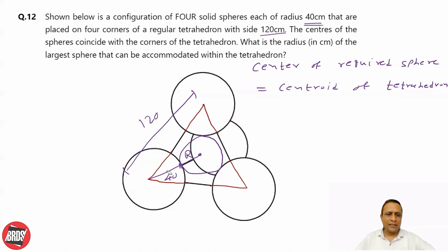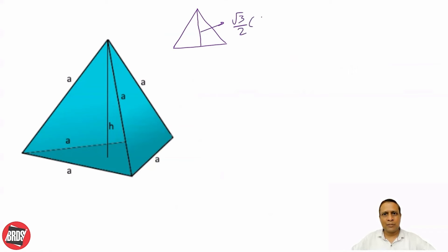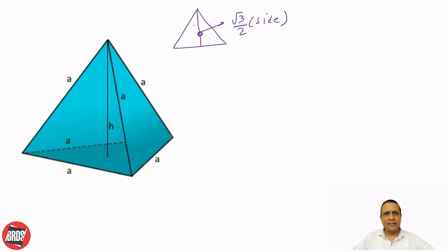The focus is on finding that distance. In an equilateral triangle, the height is given by (√3/2) × side. The centroid of an equilateral triangle divides this height in the ratio 2:1 — so if the height is 3, the distance from the vertex to centroid is 2, and from centroid to base is 1. This is the height of the tetrahedron, with the base point being the centroid of the base equilateral triangle.